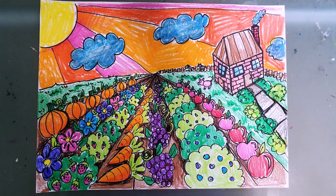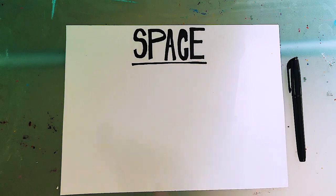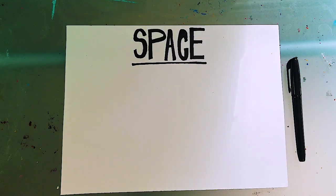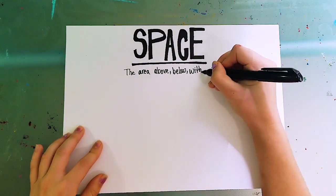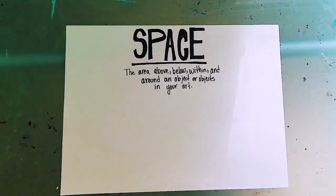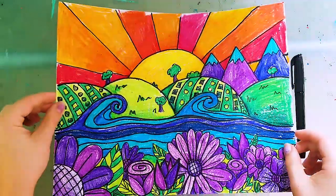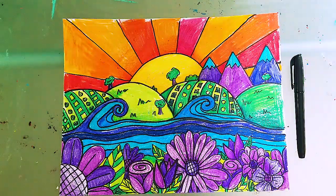Let's go ahead and get started. For this project we are talking about the element of art space, and the definition of space in art is actually pretty simple and straightforward. All it is is the area above, below, within, and around an object or objects in your art. To explain that a little further, we're going to look at this piece of art—this landscape that we did for a past project.